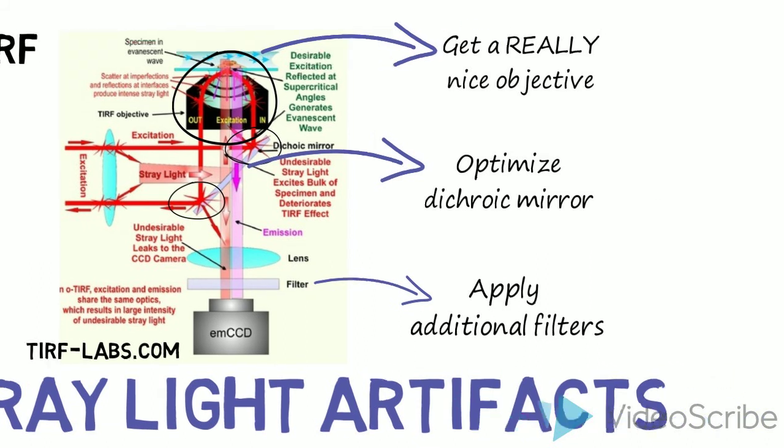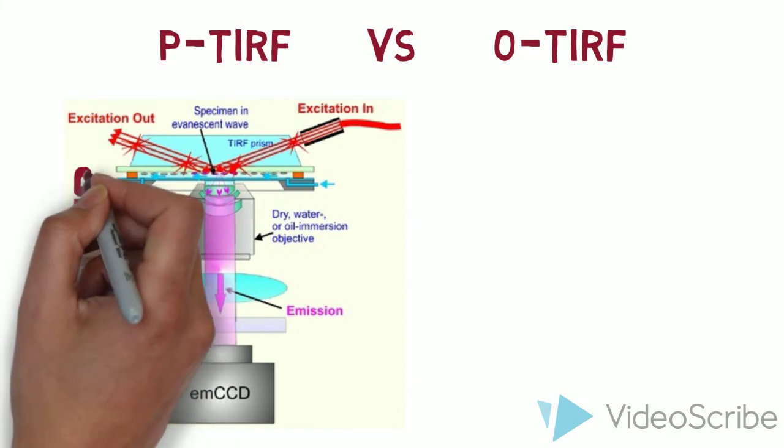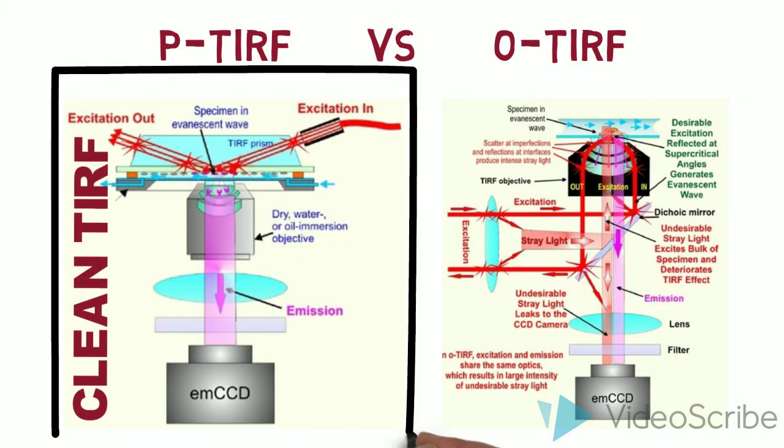However, P-TIRF is often described to have a clean TIRF and better signal-to-noise ratio in comparison to O-TIRF because of its natural lower stray light interference.